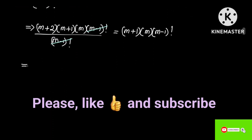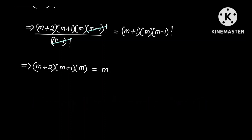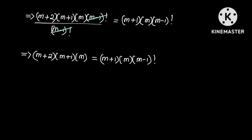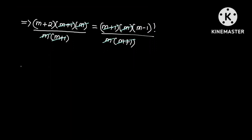After cancelling (M-1)! from both sides, we get (M+2) × (M+1) × M = (M+1) × M × (M-1)!. Since M cannot be 0 and M cannot be negative 1, we are free to divide both sides by M × (M+1). Cancelling M and (M+1) from both sides gives us a simplified equation.